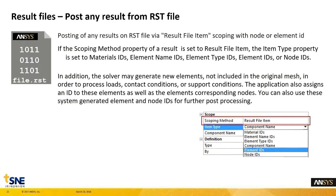Result 파일에 대해 업그레이드된 부분을 보시면, 결과에 대한 Scoping Method를 Result File Item으로 설정하시면 Item Type 속성으로 선택하실 수 있게 되었습니다. 그래서 Material ID, Element Name ID, Element Type ID, Element ID, Node ID 등을 선택해서 바로 확인하실 수 있게 되었습니다.